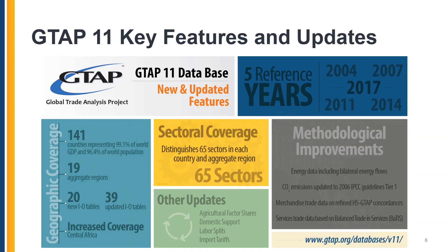Now that we've covered a bit of background on the database, let's move on to discuss some additional features of GTAP 11. We've already touched on the reference years, geographic, and sectoral coverage. Additional advances in GTAP 11 include agricultural production targeting being made default for all countries, improved energy data processing including revised computation of CO2 emissions, energy subsidies being included in the standard release, and services trade data now being derived from new data sources.